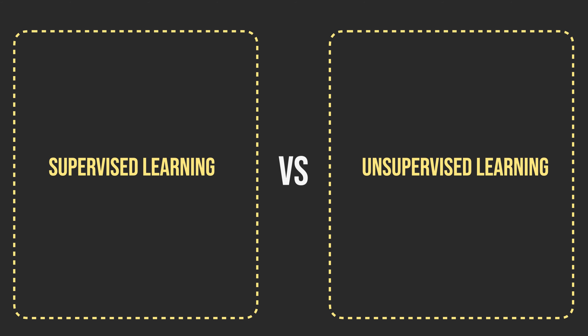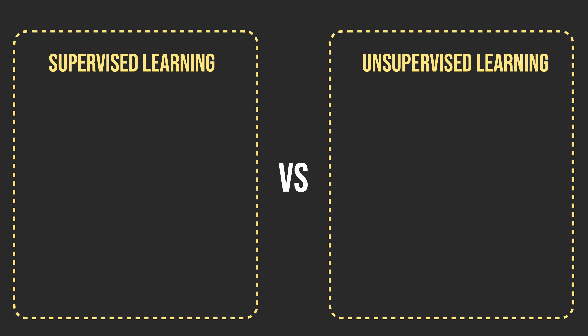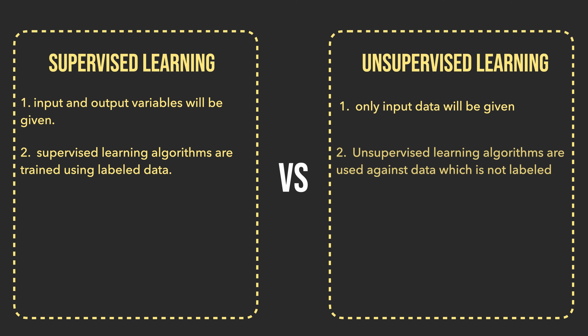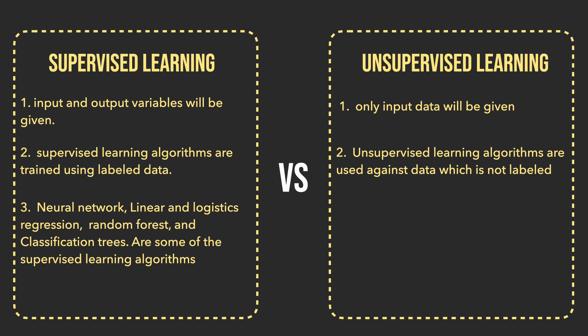Now that we know what is supervised and unsupervised learning, let's discuss some of the main differences between them. In a supervised learning model, input and output variables will be given. In an unsupervised learning model, only input data will be given. Supervised learning algorithms are trained using labeled data, while unsupervised learning algorithms are used against data which is not labeled. Neural network, linear and logistic regressions, random forest, and classification trees are some of the supervised learning algorithms.